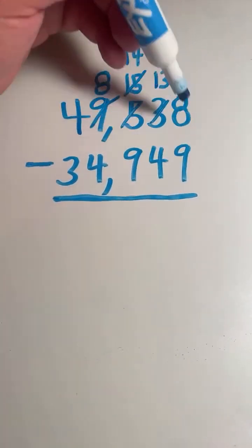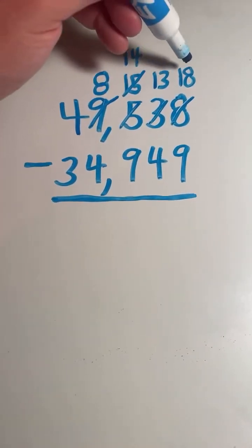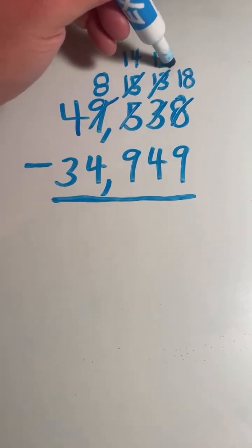You can't start with 8 and take away 9, so we have to take a 10. Take a 10 from the 10s place. That 8 becomes an 18, and that 13 gets changed again to a 12.